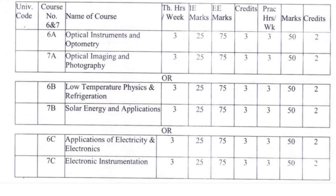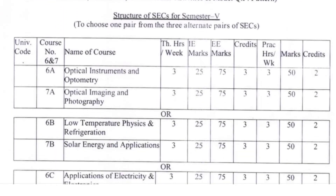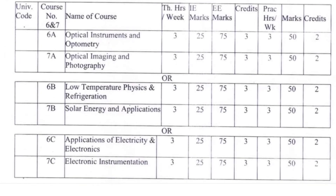Section B also has two papers: 6B and 7B. Section C has two papers: 6C and 7C. In Section A, the two papers are 6A and 7A. Paper 6A is titled 'Optical Instruments and Optometry' and paper 7A is titled 'Optical Imaging and Photography'. Section B paper 6B is titled 'Low Temperature Physics and Refrigeration' and 7B is 'Solar Energy and Applications'.